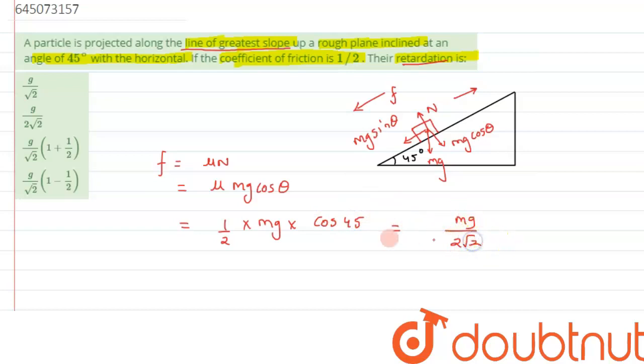...into mg into cos theta has been given as 45 degrees, so cos 45 here. So we will get mg by 2 root 2. This is the frictional force we have calculated. Now we can say we will just use Newton's second law.